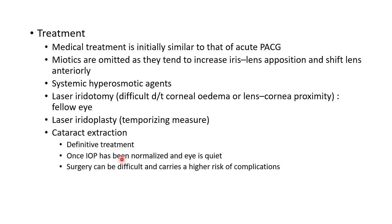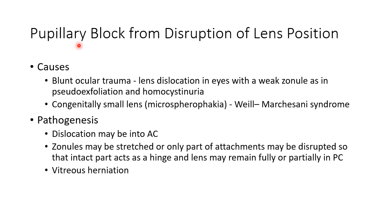Remember, cataract surgery in phacomorphic glaucoma can be difficult and carries a higher risk of complications. Coming to pupillary block from disruption of lens position: the causes include blunt ocular trauma. Even a trivial trauma can cause lens dislocation in eyes with weak zonules, as in pseudoexfoliation and homocystinuria. This can also occur with a congenitally small lens — microspherophakia — examples include Weill-Marchesani syndrome.